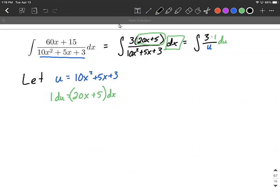From here, we just need to integrate. So the 3, the constant, can come out in front, and we're trying to find the antiderivative of 1 over u du.